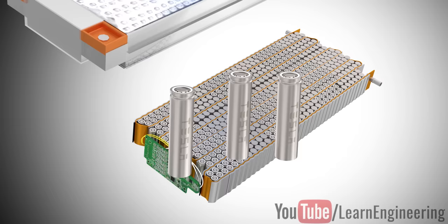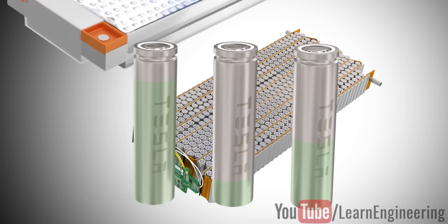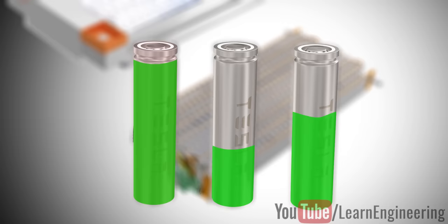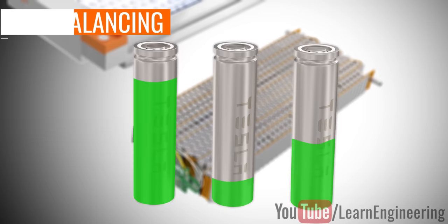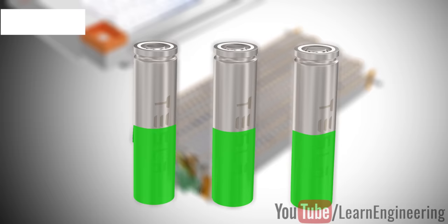Voltage protection is another crucial job of the BMS. For example, in these three cells, during charging, the higher capacity cell will be charged more than the rest. To solve this problem, the BMS uses something called cell balancing. In cell balancing, all the cells are allowed to charge and discharge equally, thus protecting them from over and under voltage.